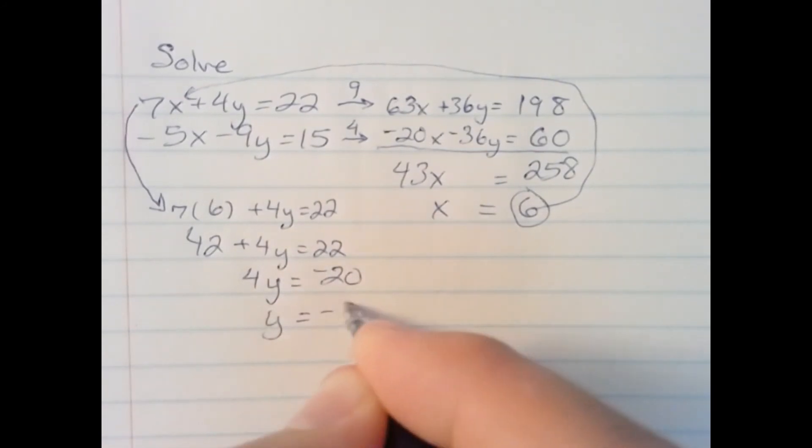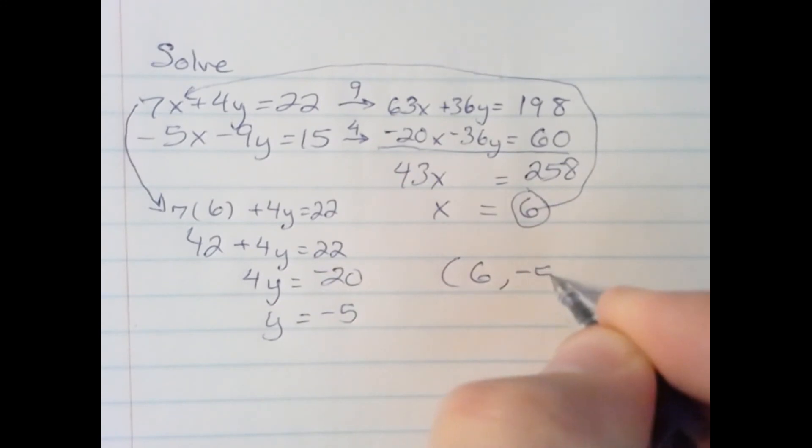y equals negative 5. So my coordinates are 6, comma, negative 5.